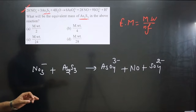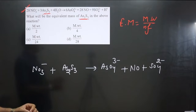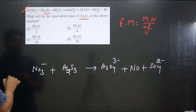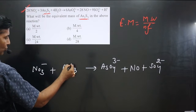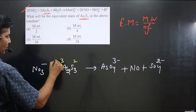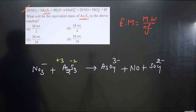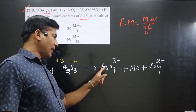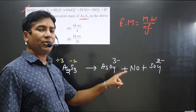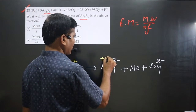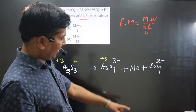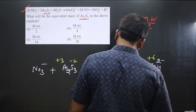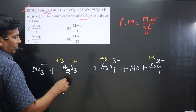Now let's calculate the n-factor value. Before calculating it, we write down the oxidation numbers of elements on both sides of the equation. For arsenic: using the oxidation number calculation, arsenic is present in +3 on the left side and +5 on the right side (in AsO₄³⁻). For sulfur in sulfate, sulfur is present in the +6 oxidation state.